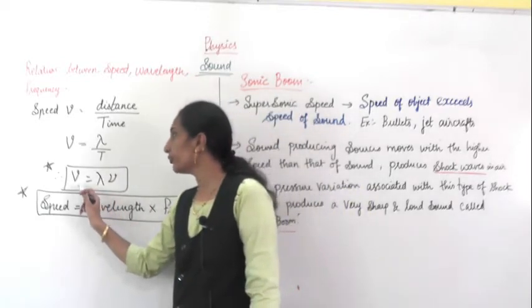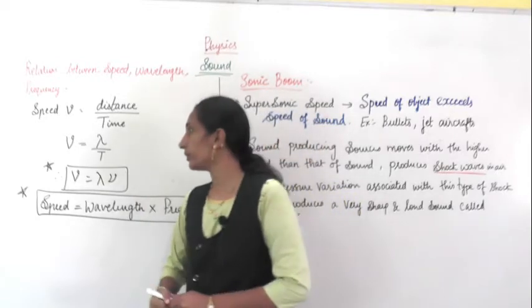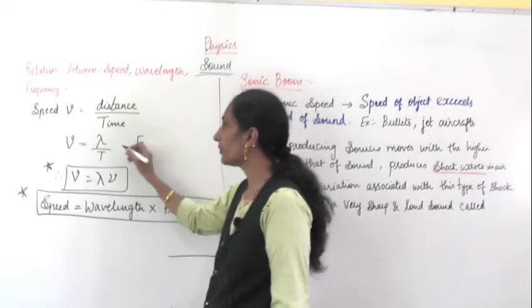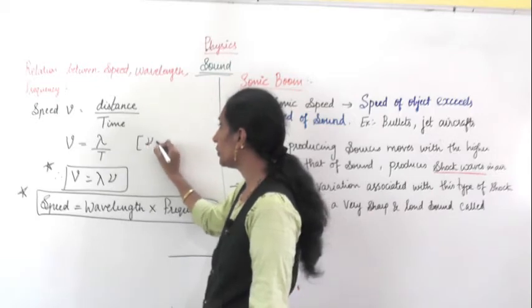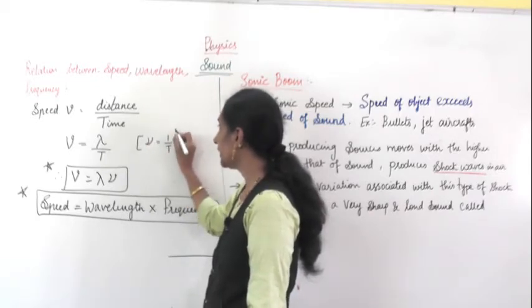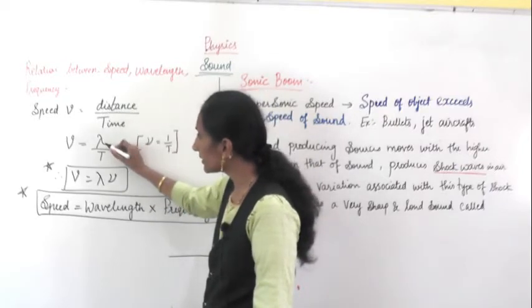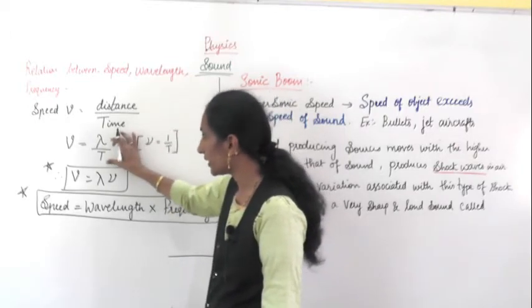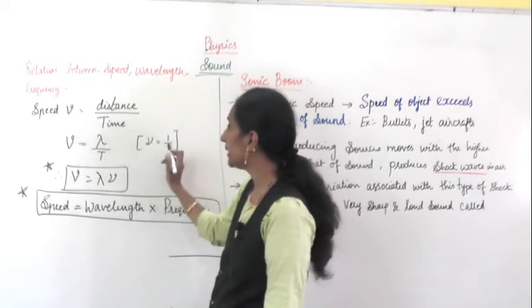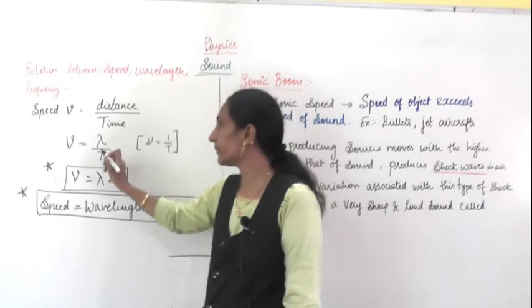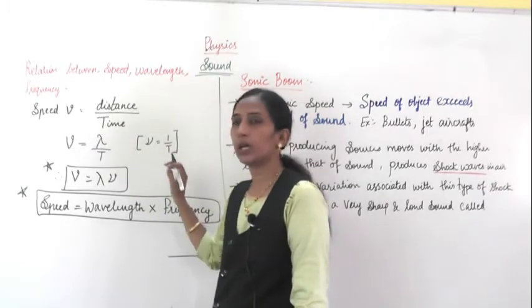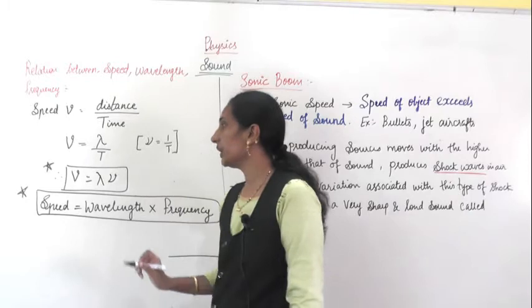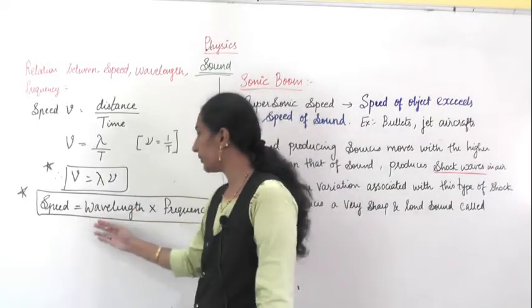Next step: v equals lambda times nu. How did this come? You know the relation between time period and frequency. Frequency nu equals 1 divided by T. So here, lambda divided by T means we consider the factor 1 divided by T. Instead of 1 divided by T, we use the letter nu, that is frequency. So we remove 1 divided by T and write nu in its place. Nu means frequency. This is how we got the relation between speed, wavelength and frequency.